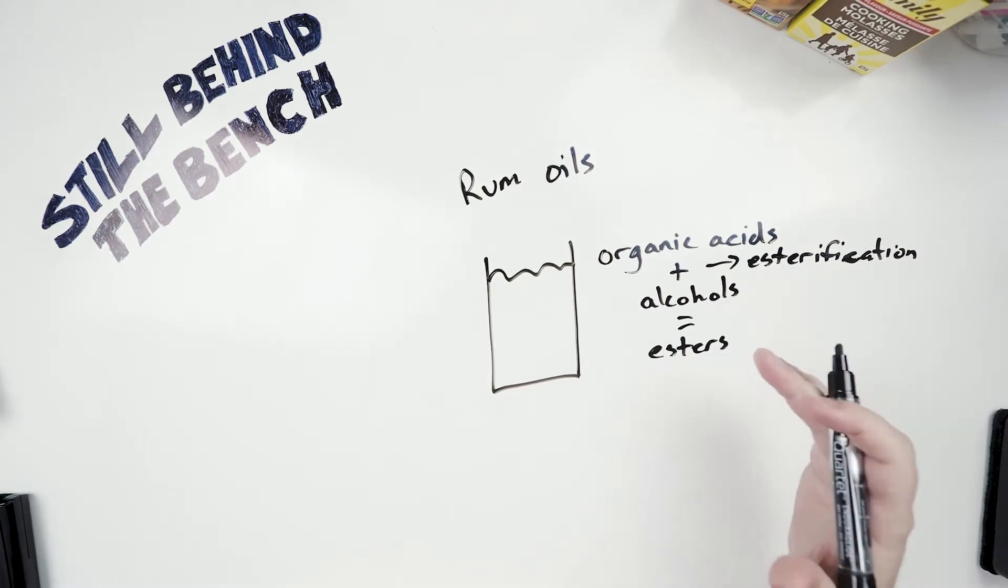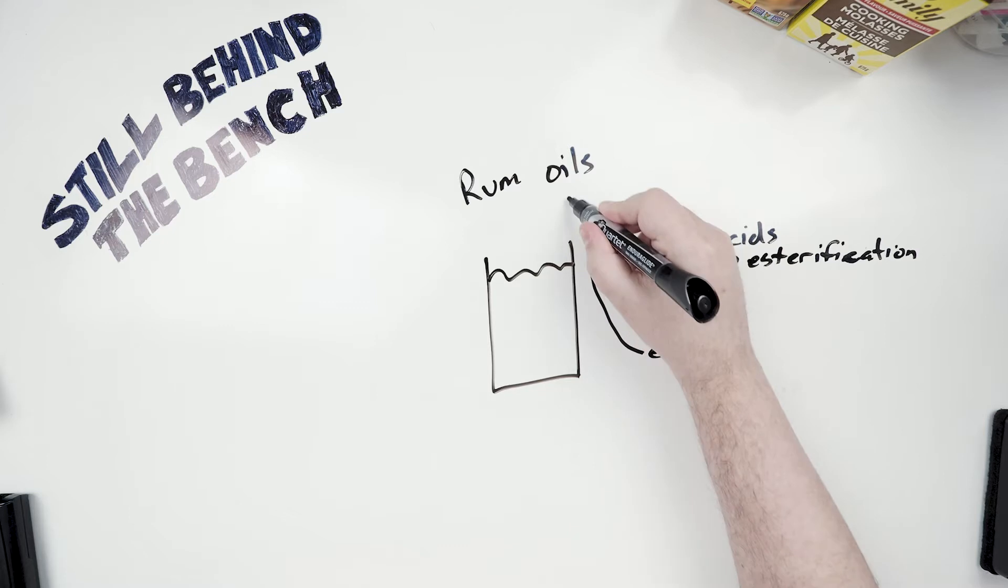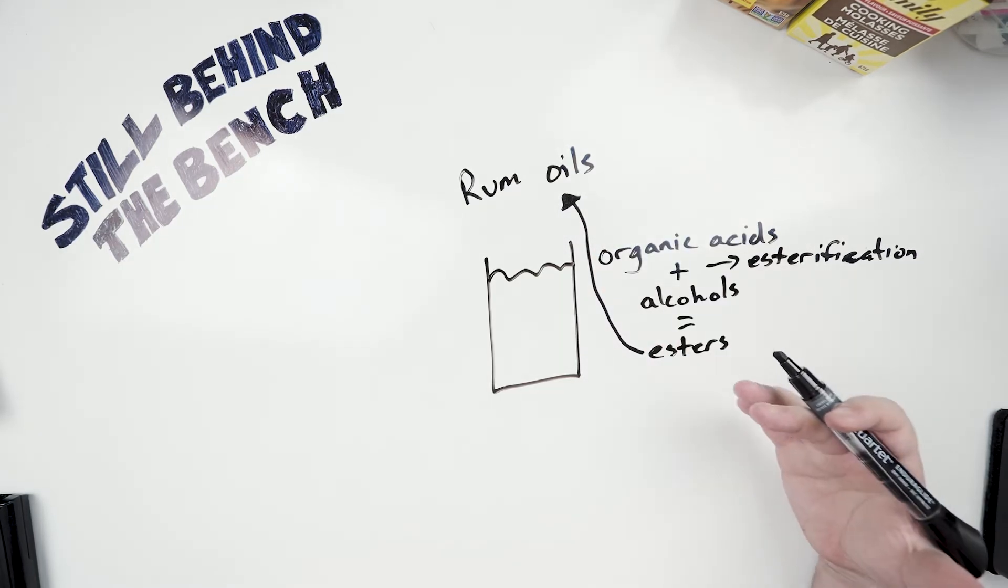Things like acetic acid, malic acid, lactic, butyric, all kinds of these organic acids. And when you put them into your ferment or you put them into your still with your wash, it's gonna react with the alcohols in there and it's gonna produce esters. So these esters make up the predominance of the rum oils and give you these funky flavors.